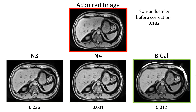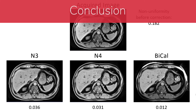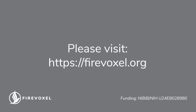Note that the BICAL correction preserves the contrast between the liver and spleen or muscle, whereas N3 and N4 methods reduce this contrast. This concludes this brief introduction into FireVoxel's non-uniformity correction tools. You can pick the most appropriate tool based on your application, required degree of correction, and processing time. For more information, please visit our website.